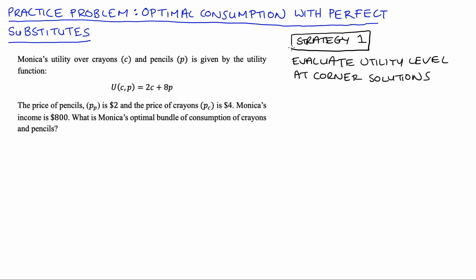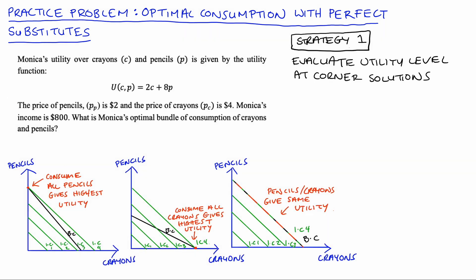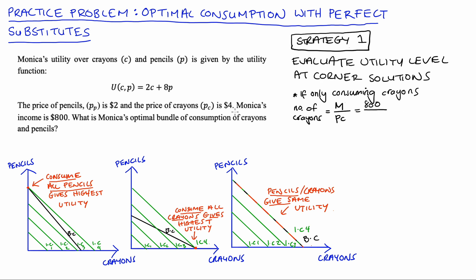Let's apply strategy one. We evaluate Monica's utility at the possible corner solutions to see which bundle puts us on a higher indifference curve. If Monica spends all of her income on crayons, we divide her income by the price of crayons: 800 divided by 4 equals 200. So she would purchase 200 crayons. Substituting into the utility function: U equals 2 times 200 plus 8 times 0 — since she's consuming no pencils — which equals 400.